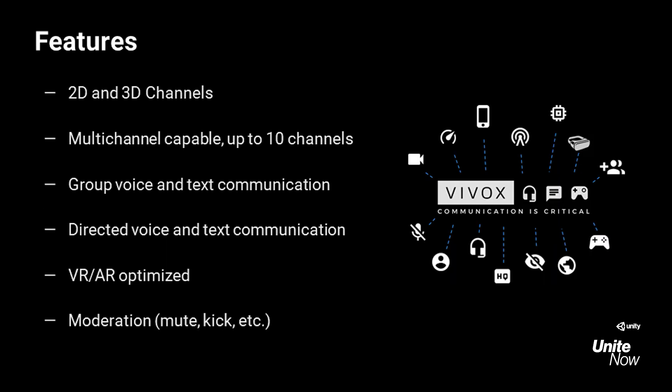So what features does Vivox actually give you? Let's go over some of the highlights. First, 2D and 3D channels — these are where voice communications are handled within the Vivox system. Channels can have thousands of players or just a few, and they are platform agnostic so cross-platform users can join the same channel. In a 2D channel, you can hear all designated players at the same volume, like standard squad chats. In comparison, 3D positional channels take into account a player's orientation and location to make voices sound closer or farther away. Players can join up to 10 channels — for example, someone can be in a team chat 2D channel and also have general 3D positional audio around them.